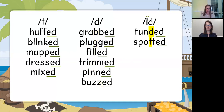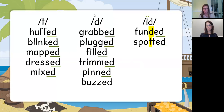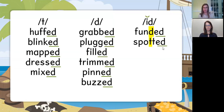The third sound for ED: we use this pronunciation when the word ends with a D or a T, because it's already making a D or T sound and I can't use those sounds. So the third sound for ED is ID. Listen: funded, spotted. Your turn — say ID at the end. Funded, spotted. So the three sounds for ED are T, D, and ID.